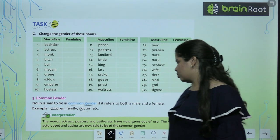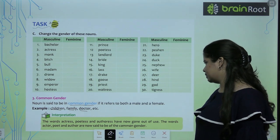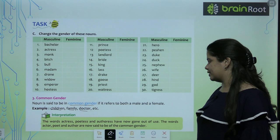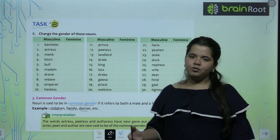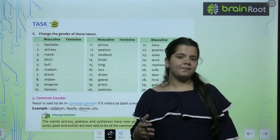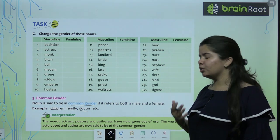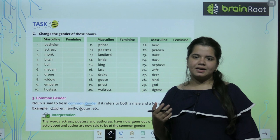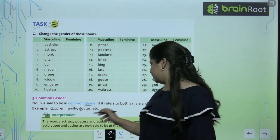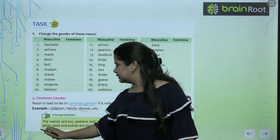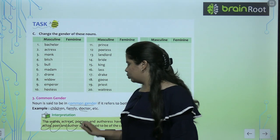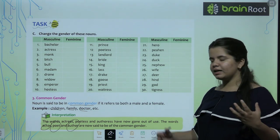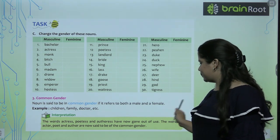The words actress, poetess, authoress have now gone out of use. The words actor, poet and author are now said to be in common gender. Ab wo ye bata rahe hai ki actress, poetess, authoress — yeh sare words used nahi hote. Hum feminine gender ke liye inhe use nahi karte. Hum actor, poet, author ko common gender ke liye use karte hai — tha hai ki wo male bhi ho sakta hai and female bhi. I hope it's clear.